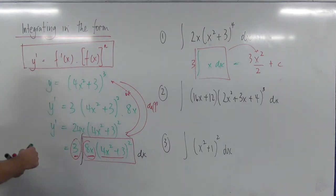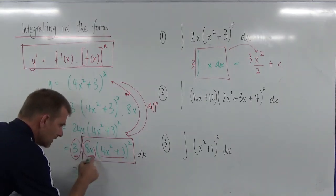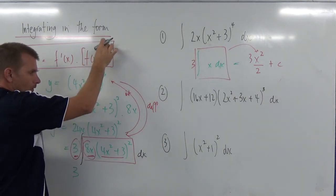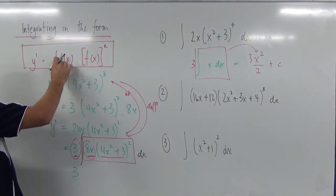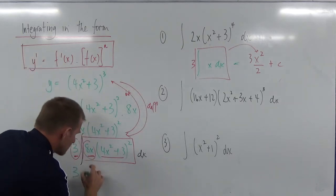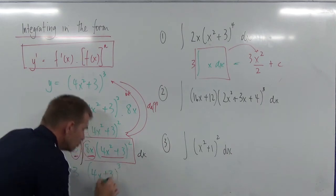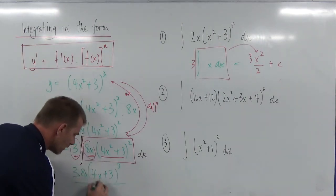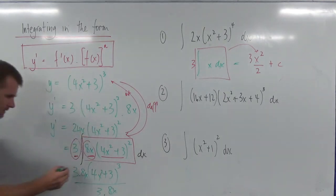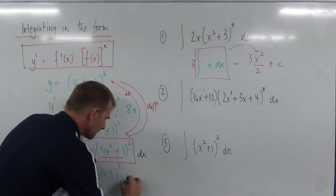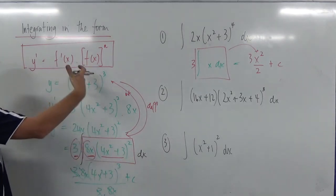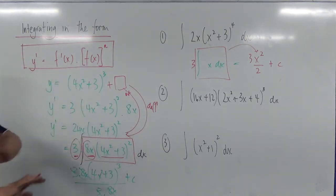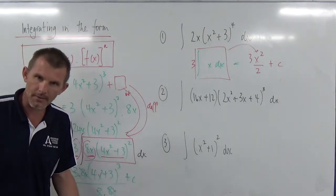So this here is in that format. What I do is write the function, raise it by a power of 1, and divide by the derivative of the inside to cancel that out. This part is just going to become (4x² + 3)³ — raising the power by 1. I don't have to worry about dividing by the derivative of the inside because that would have been cancelled out. So these all cancel out and I'm left with that plus c. That's that guy — I've come full circle. The plus c is there because when I differentiated, I lost any constant that was there.